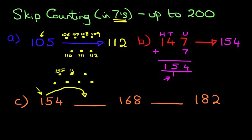155, 156, 157, 158, 159, 160, 161. That is our answer, 161. So the number after 154, if we are counting in sevens, is 161.